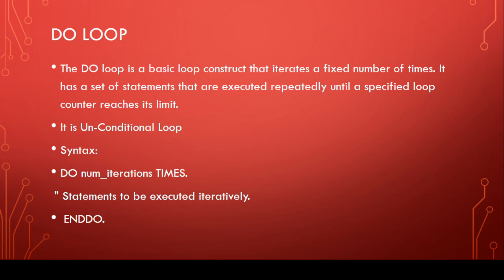This means DO loop is a loop which has a fixed number of iterations. If we want to execute something for a particular limit — let's say we want to print something five times, six times, or any number of times — we use DO loop. It is also called an unconditional loop because we are not checking any condition within the loop.